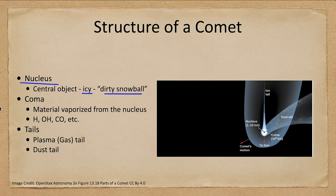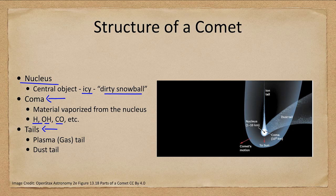The coma around the nucleus is material that has been vaporized — removed from the nucleus by the heat of the sun — so this only occurs when it is close to the sun. It is mostly hydrogen hydroxyl molecules, carbon monoxide molecules, and similar very simple compounds. The nucleus itself is invisible; we cannot see it from Earth, though we can see the coma when it gets close enough to the sun. The nucleus is only a few kilometers in size.